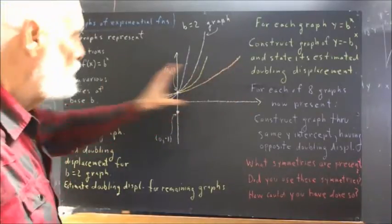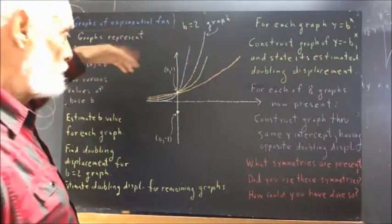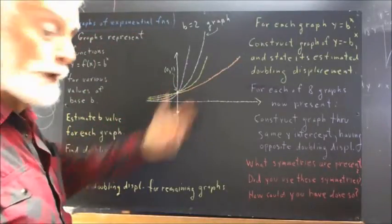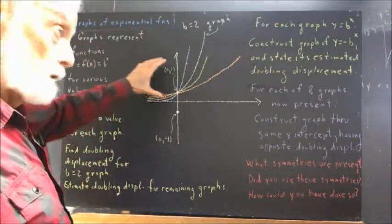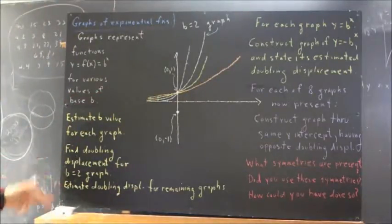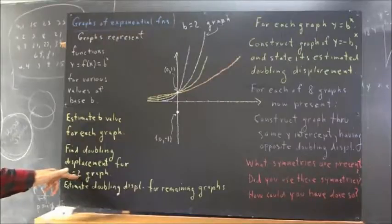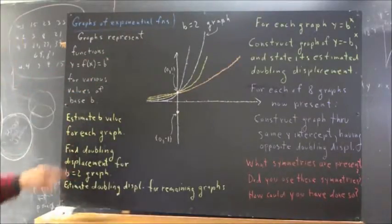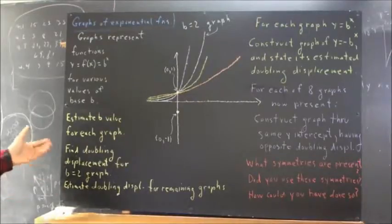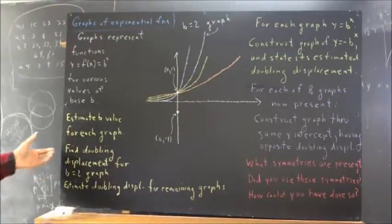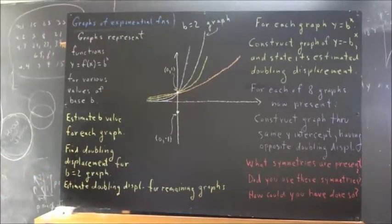There's no scale on this graph, so you can't just read the doubling displacement for the b equals 2 graph off of the picture here. You need to figure out from the fact that b equals 2, what's the doubling displacement for 2 to the x. And, of course, that means you're going to have to think about what the doubling displacement means. We haven't asked you a question of this nature yet. And, of course, there are going to be some hints.